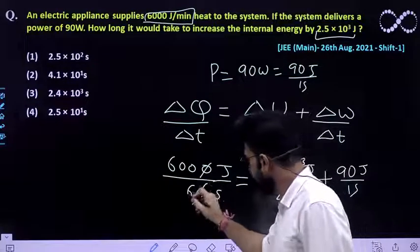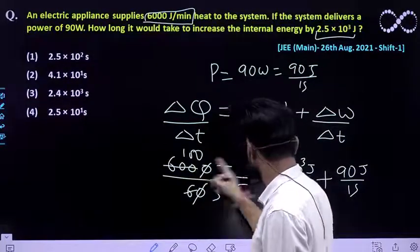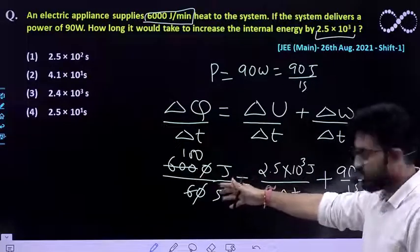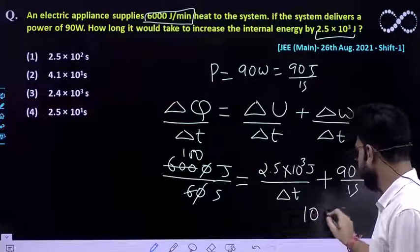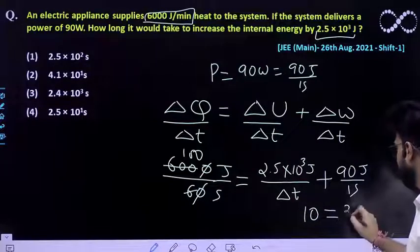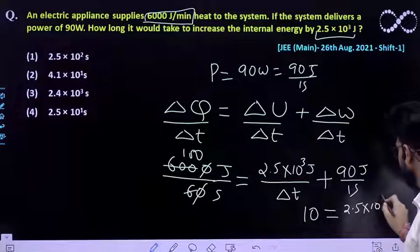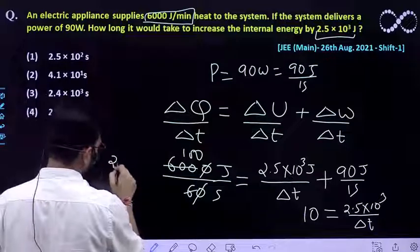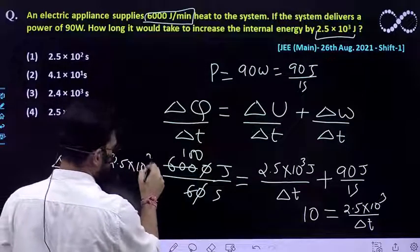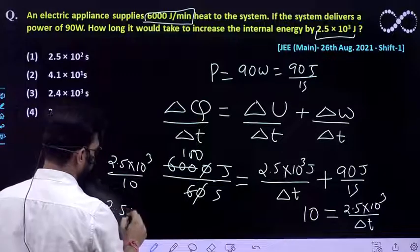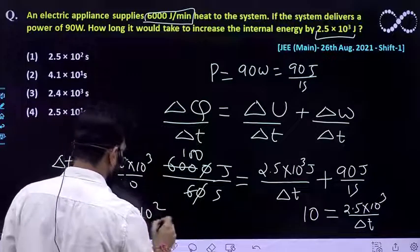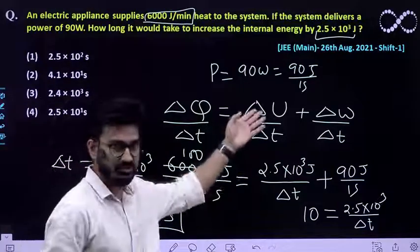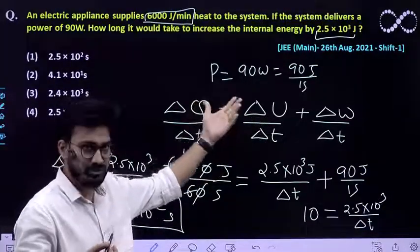This gives us 100 Joules per second on the left side. Subtracting 90 from both sides gives 10. So 10 must equal 2.5 × 10³ divided by delta T. Therefore, delta T becomes 2.5 × 10³ divided by 10, which is 2.5 × 10² seconds. This is the time required to increase the internal energy of the system by 2.5 × 10³ Joules.